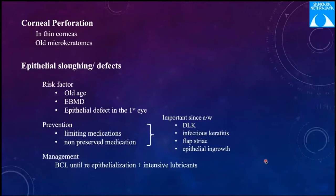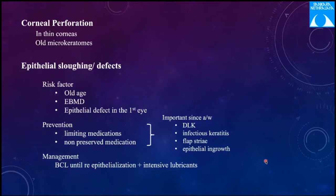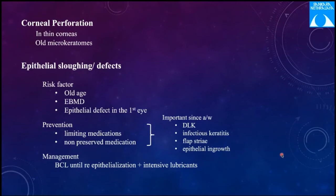Corneal perforation can occur in very thin corneas or with older microkeratome models. Epithelial sloughing and defects have risk factors of old age, epithelial basement membrane dystrophies, and pre-existing epithelial defects. Epithelial defects are associated with diffuse lamellar keratitis, infectious keratitis, flap striae, and epithelial ingrowth. Prevention includes limiting pre-op topical proparacaine use as excessive use increases the risk, and using non-preserved medications. Management includes BCL until re-epithelialization and intensive lubrication.